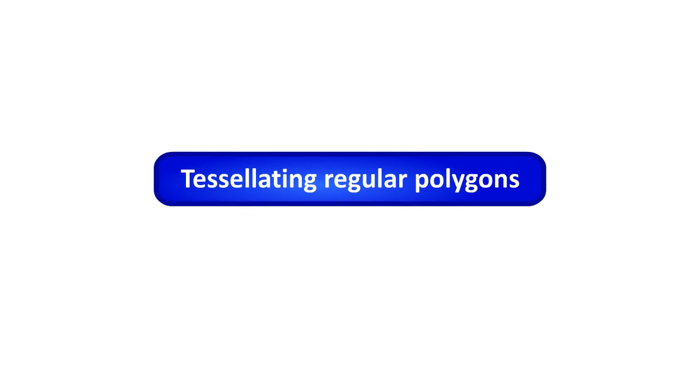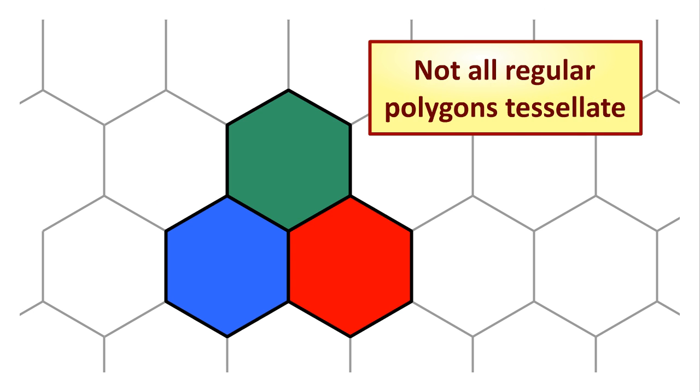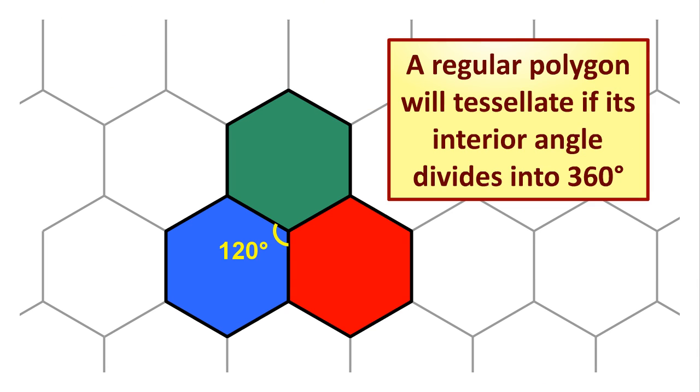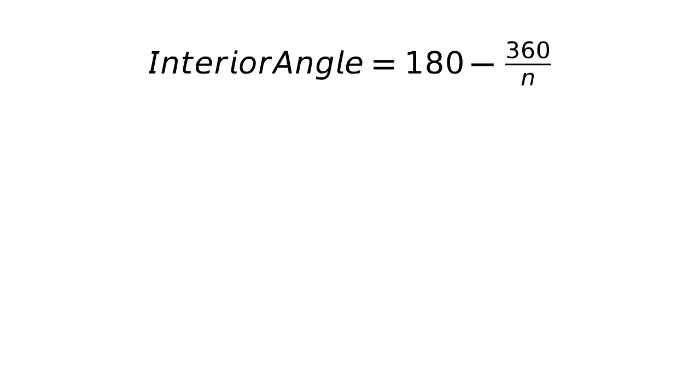Tessellating regular polygons. Not all regular polygons tessellate. A regular polygon will tessellate if its interior angle divides into 360 degrees. The interior angle is 180 minus 360 over n degrees.